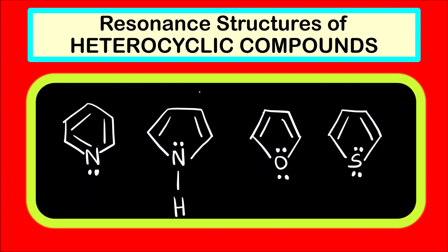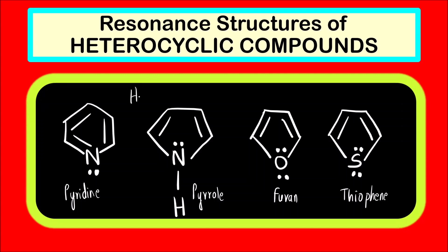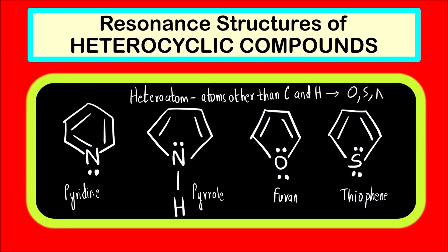These are the heterocyclic compounds that we are going to see: pyridine, pyrrole, furan, and thiophene. Now what is the meaning of a heterocyclic compound? Compounds having a heteroatom are called heterocyclic compounds. A heteroatom is an atom other than carbon and hydrogen — it can be oxygen, sulfur, or nitrogen, as you can see in these molecules.